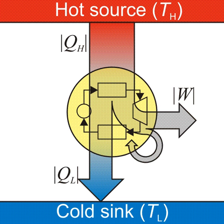Eta equals minus W over minus QH equals minus QH plus QC over minus QH equals 1 minus QC over minus QH.